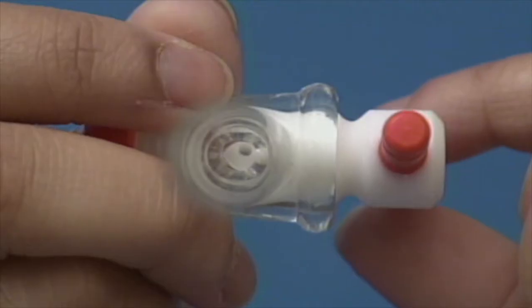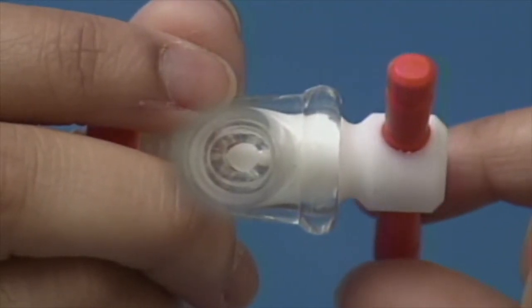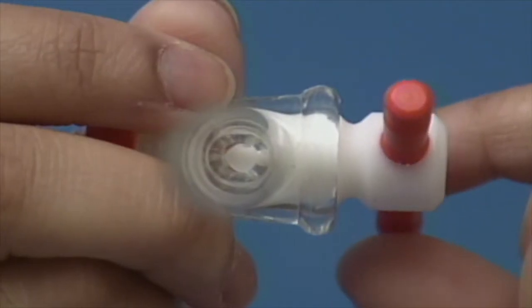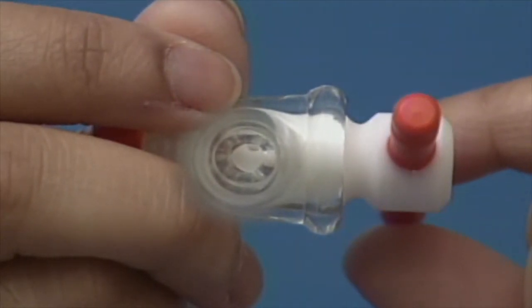The stopcock is the valve that controls the flow of liquid from a burette. As the stopcock handle is turned, the position of the hole in its stem determines how fast the liquid flows.